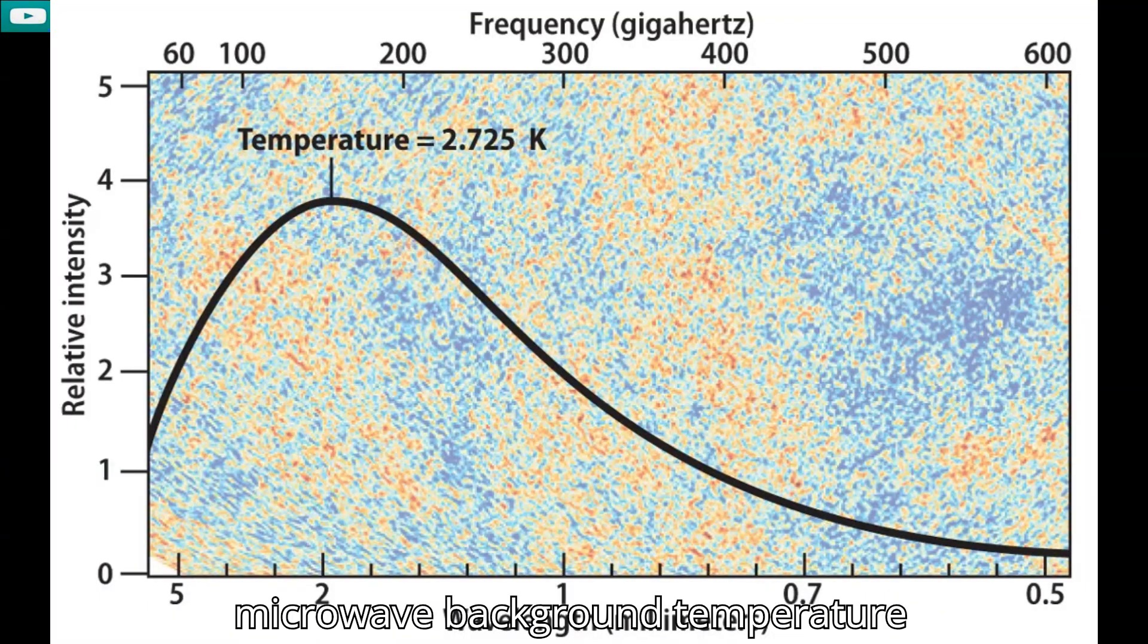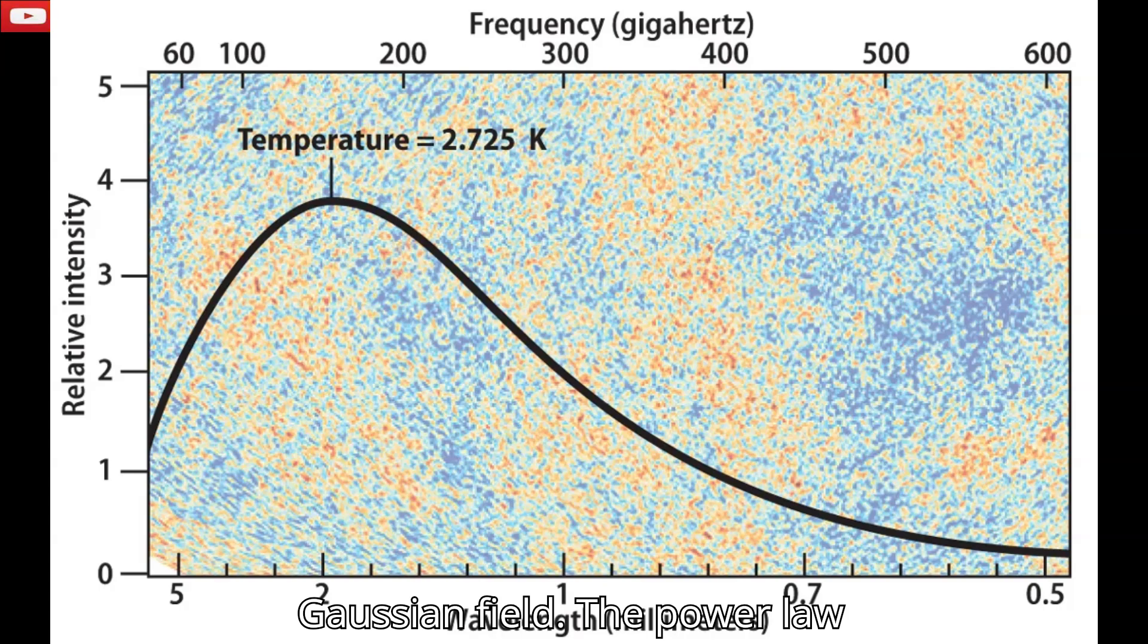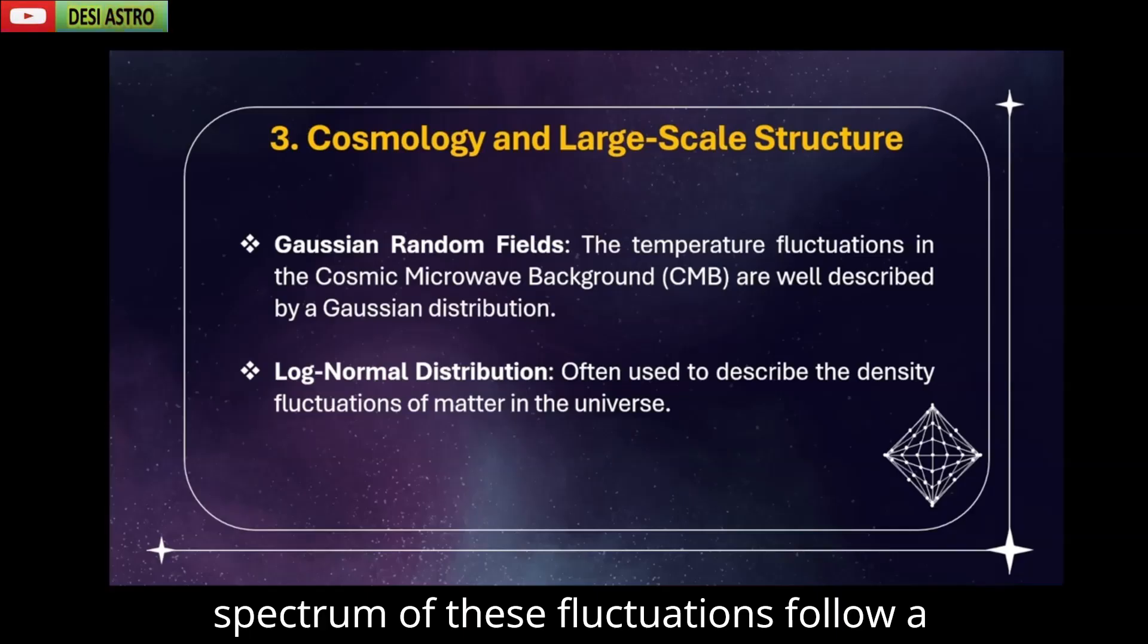The cosmic microwave background temperature fluctuations are modeled as a Gaussian field. The power spectrum of these fluctuations follow a Gaussian distribution around a mean value.